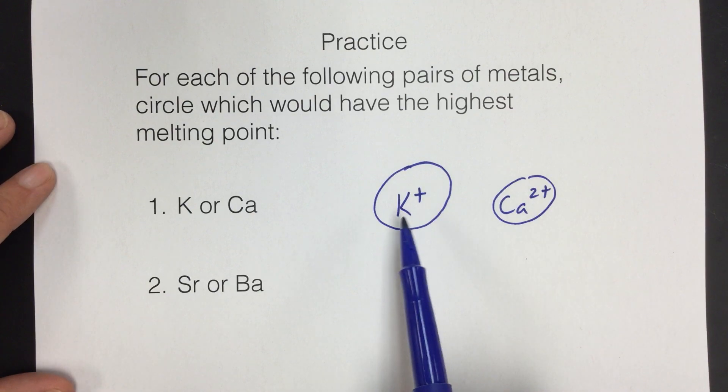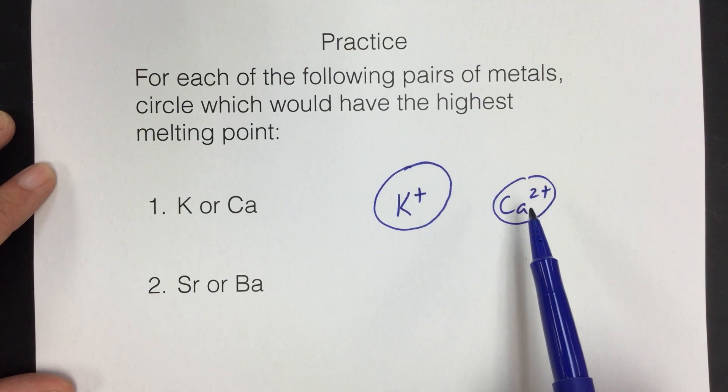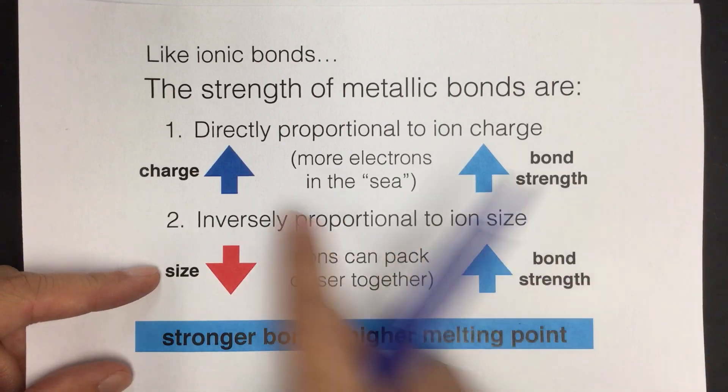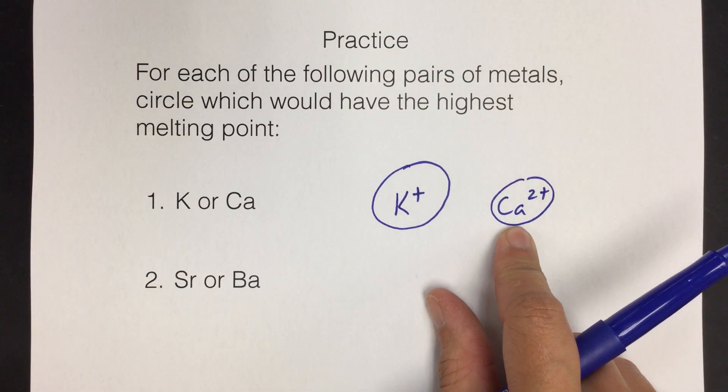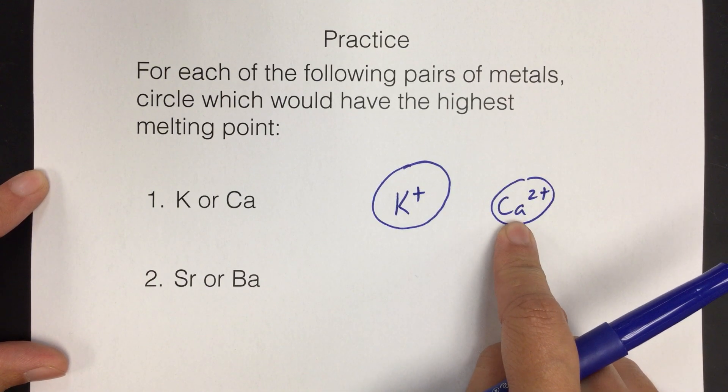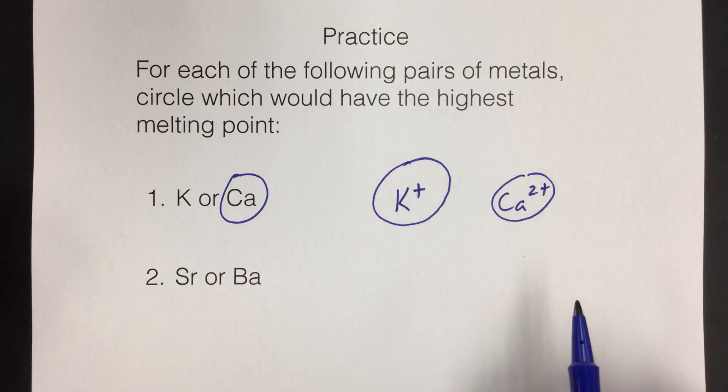Here we have a bigger metal ion and it has a smaller charge. Calcium is smaller and has a stronger charge, so it should be an easy choice. We want bigger charges and we want smaller sizes. So calcium gives us both the bigger charge and the smaller size, so it's going to have a stronger bond, which means a higher melting point. So calcium would be the correct answer here.